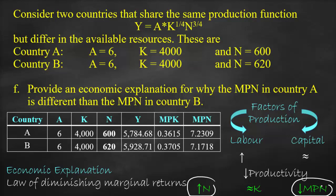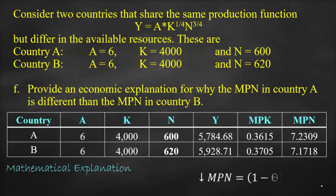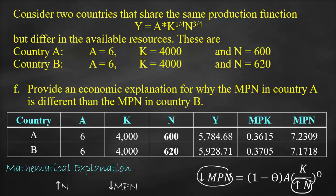For the mathematical explanation, look at the MPN formula: MPN = (1-θ) × A × (K/N)^θ. Here N is the denominator — if we increase N, the whole ratio (K/N) goes down, and therefore MPN goes down. This mathematically confirms the negative relationship between N and MPN. The same concept applies to capital: if you increase K without increasing labor, MPK will be lower.